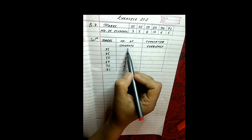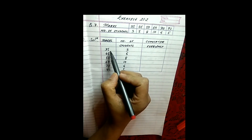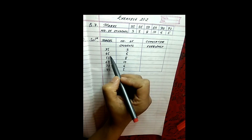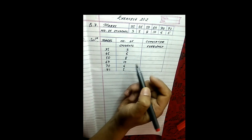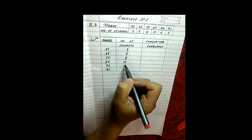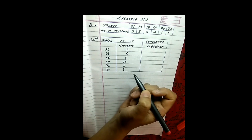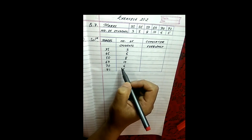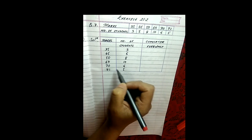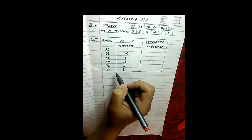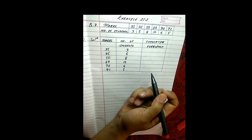This means there are 3 students who have got 35, there are 5 students who got 45, there are 8 students who got 50 and 10 students have got 64, 5 students have got 70 and another 5 students have got 72. To solve this one, first we will try and find out what is the cumulative frequency.